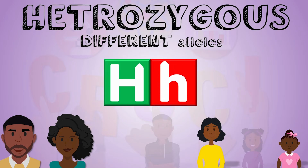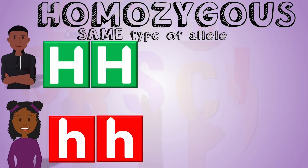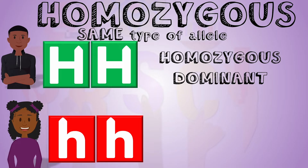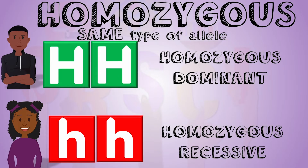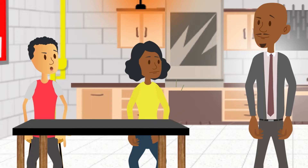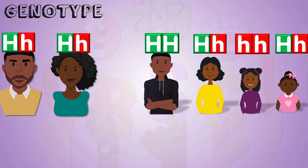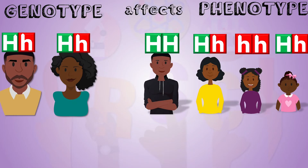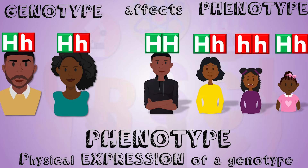Your genotype could be heterozygous, meaning you have a dominant and a recessive allele, or it could be homozygous, meaning you have the same type of allele — homozygous dominant if you have two dominant alleles, or homozygous recessive if you have two recessive alleles. Your genotype affects your phenotype, the physical expression of the gene.